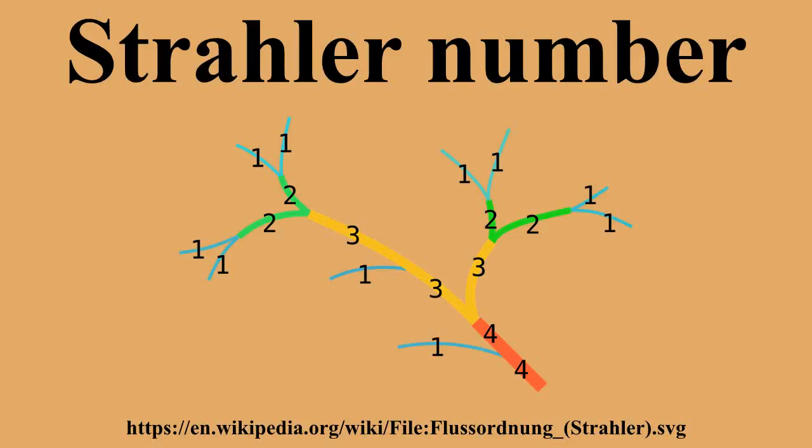If the node has one child with Strahler number i, and all other children have Strahler numbers less than i, then the Strahler number of the node is i again. If the node has two or more children with Strahler number i, and no children with greater number, then the Strahler number of the node is i plus 1.